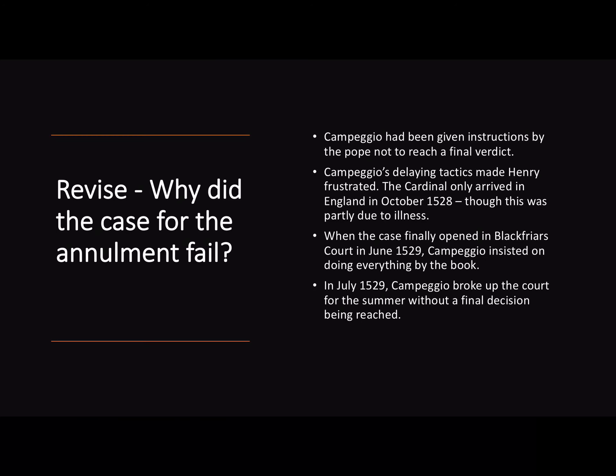So, why did the case for the annulment fail? Campeggio had been given instructions by the Pope not to reach a final verdict. His delay and tactics made Henry frustrated, and he only arrived in England in October 1528, though this was partly due to illness. When the case finally opened in Blackfriars Court, Campeggio insisted on doing everything by the book. In July 1529, Campeggio broke up the court for the summer without a final decision being reached. This was all a long-term effect of the sack of Rome, where Charles had captured the Pope.